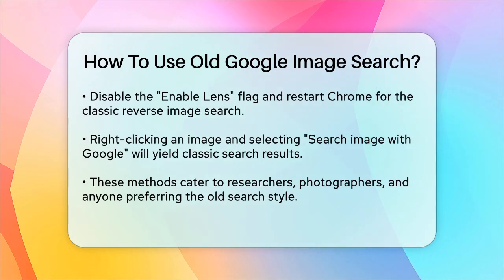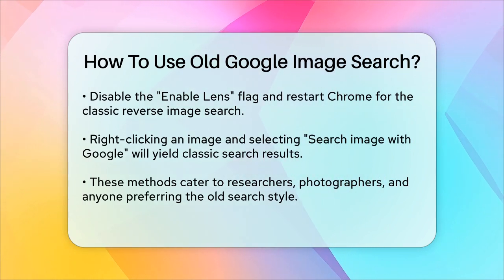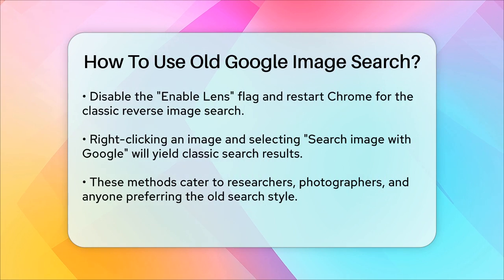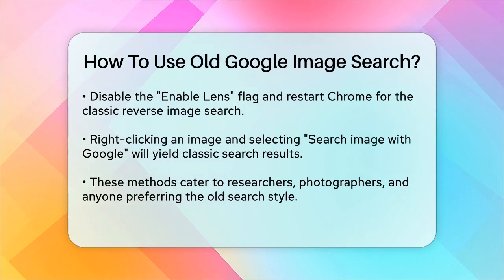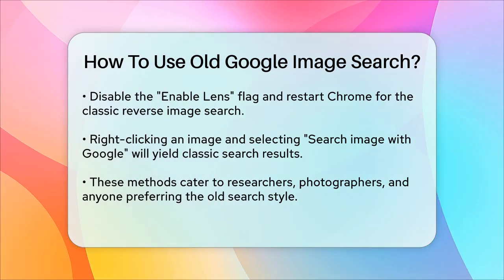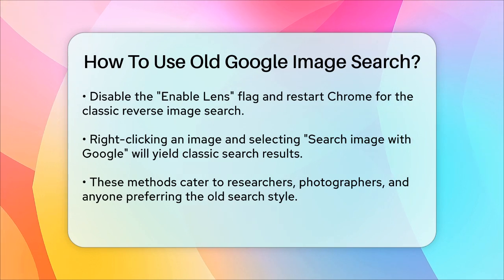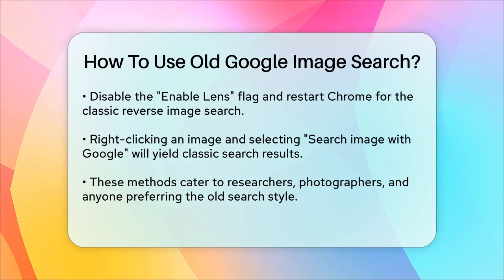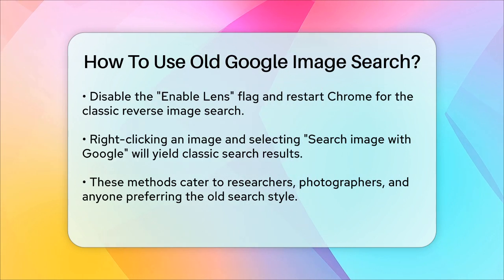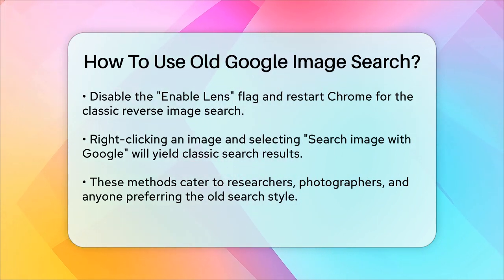When you right-click an image and select Search Image with Google, you'll get the classic search results showing all the places where the image is used on the web, rather than the more modern Google Lens interface. So, whether you're a researcher, photographer, or just someone who prefers the old way of searching, these methods will help you get back to the simple and efficient image search experience you're used to.